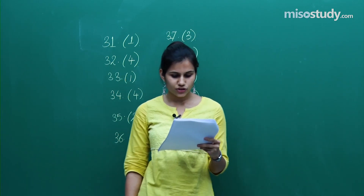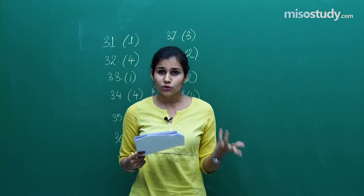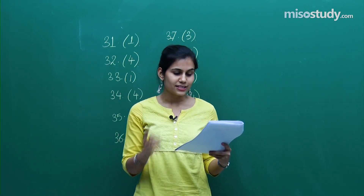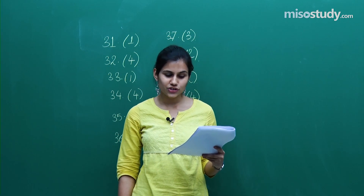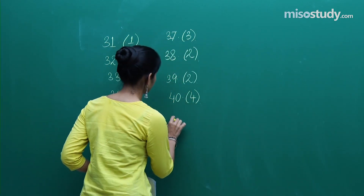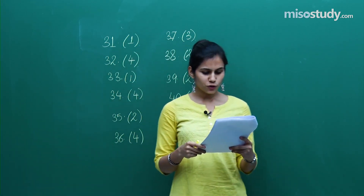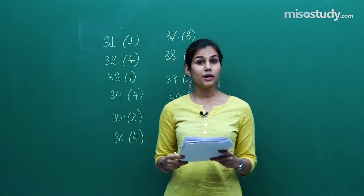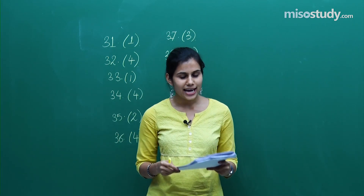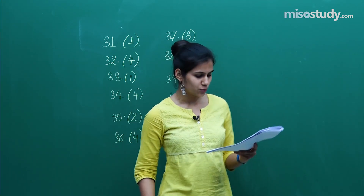Question 41 is from sets and relations — it is always asked in the main paper, so it's no wonder it's there. It has the first option as the correct one. Question 42 is from permutations and combinations, a pretty nice question from the 11th standard, holding the fourth option as the correct answer.